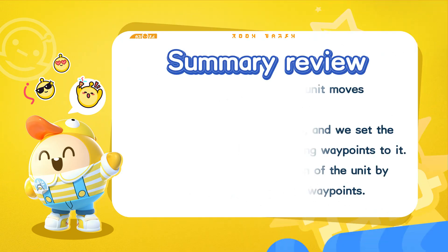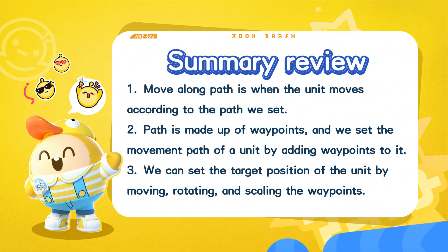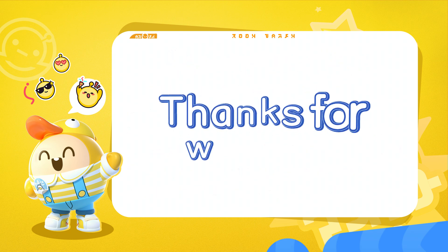Summary: Move Along Path is when the unit moves according to the path we set. The path is made up of waypoints, and we set the movement path of a unit by adding waypoints to it. We can set the target position of the unit by moving, rotating, and scaling the waypoints. Thanks for watching.